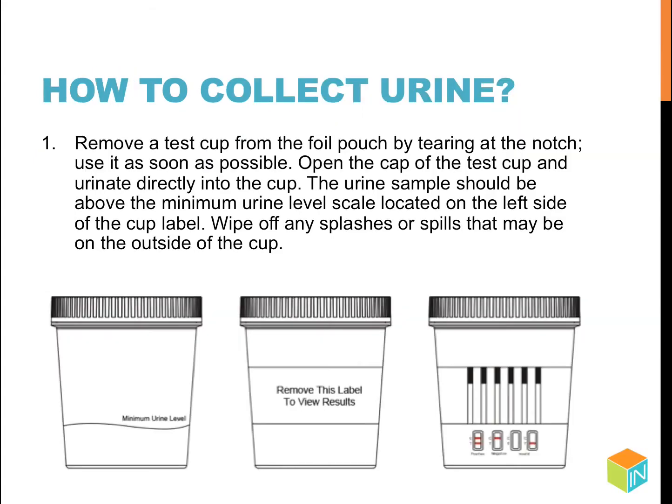To collect urine, remove the test cup from the foil pouch by tearing at the notch and use it as soon as possible. Open the cap of the test cup and urinate directly into the cup. The urine sample should be above the minimum urine level scale located on the left side of the cup label. Wipe off any splashes or spills on the outside of the cup.